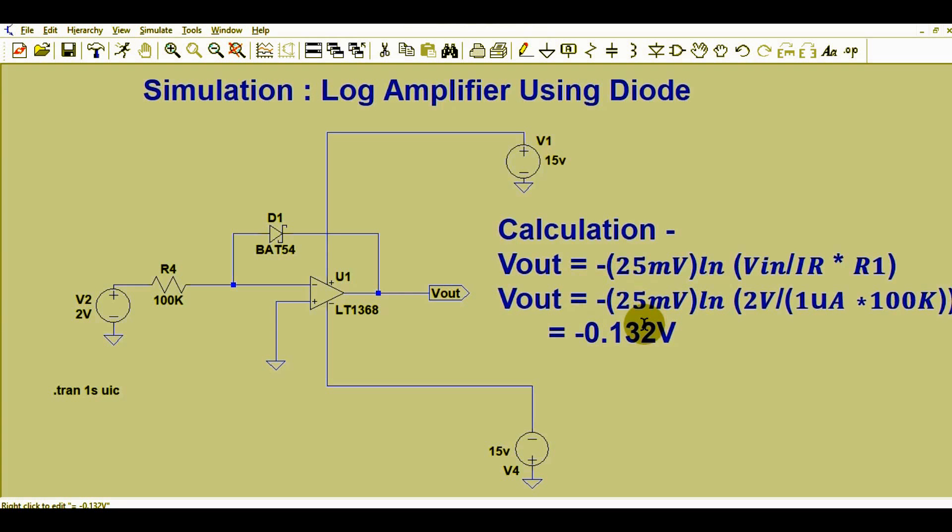This is operational amplifier LT1368. The positive supply is connected to V1, which is 15 volts. The negative supply is connected to V4, which is minus 15 volts. This is Vout, and your diode is connected in a feedback loop.